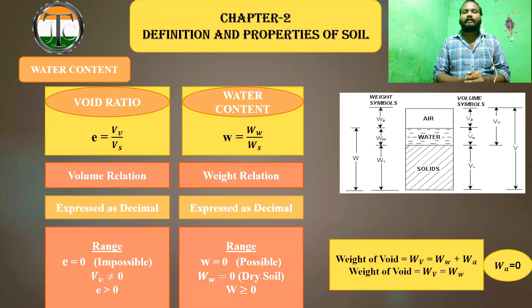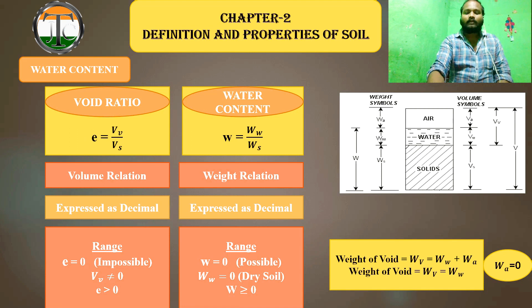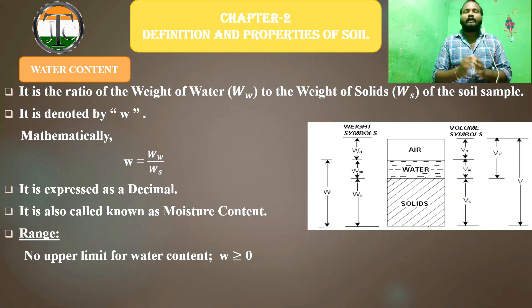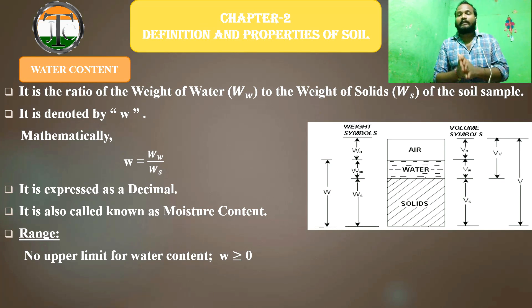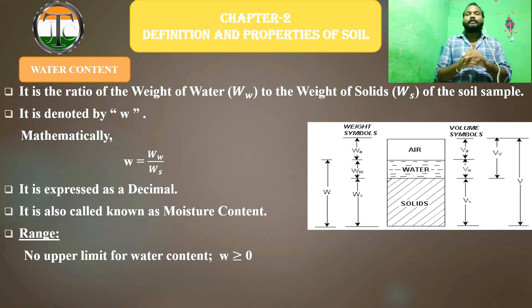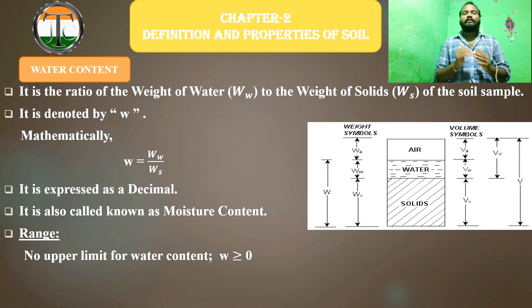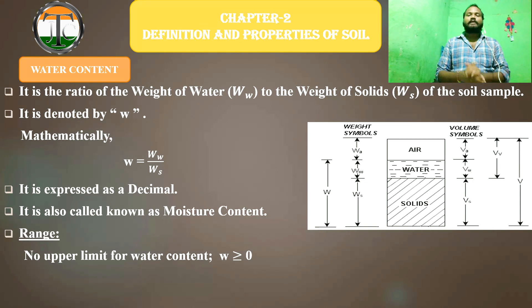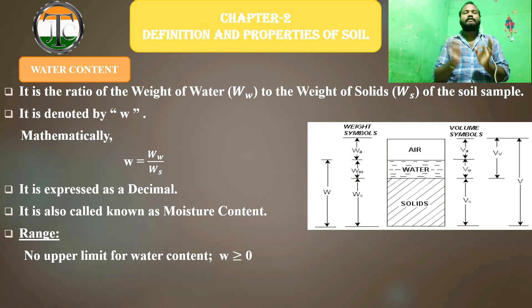So now the concept is clear. Mathematically, w equals weight of water divided by weight of solid, and it is expressed as a decimal — not percentage. It is also known as moisture content, so in numerical problems it may be referred to as moisture content. Note: there is no upper limit for water content — it can be anything: one, two, three, four — and it is also greater than or equal to zero.